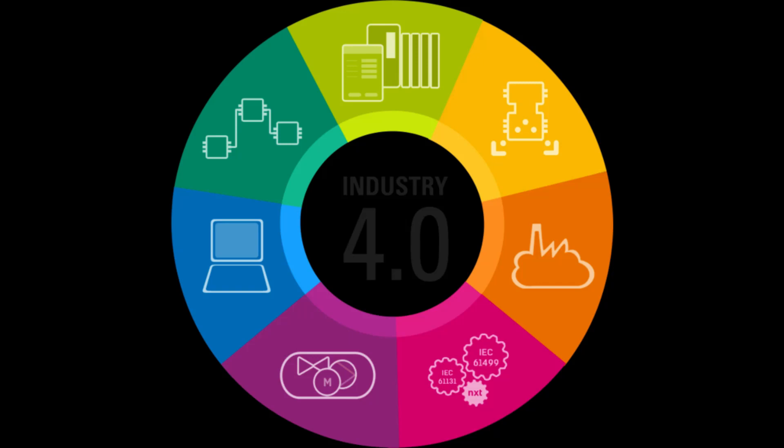The essential progress from traditional manufacturing toward Industry 4.0 established four important features and characteristics: 1. Vertical networking of smart production. 2. Horizontal integration over a new generation of global value chain networks. 3. Through-life engineering over the whole value chain. 4. The influence of exponential technologies.